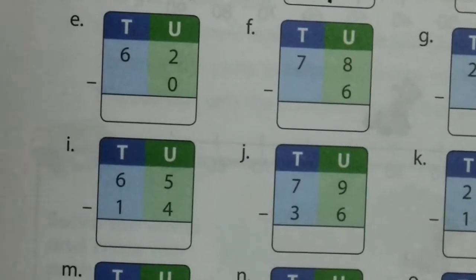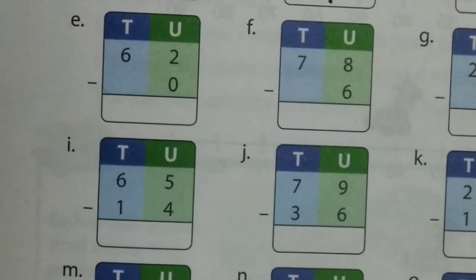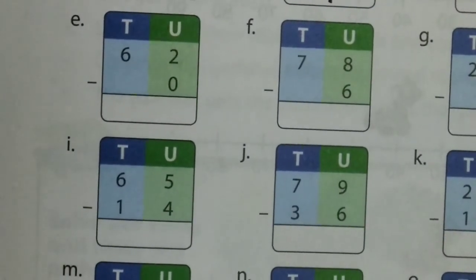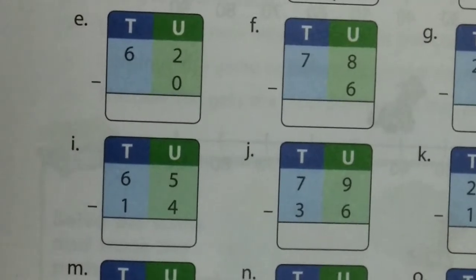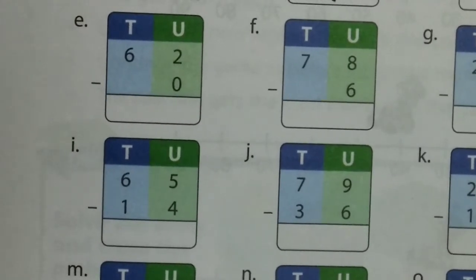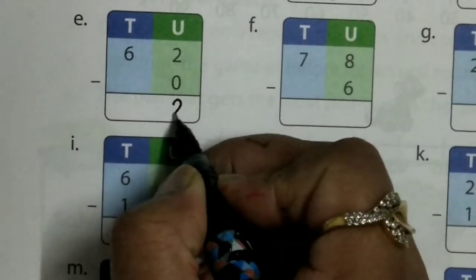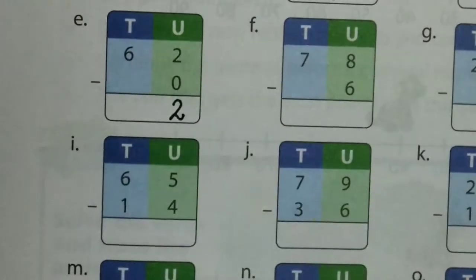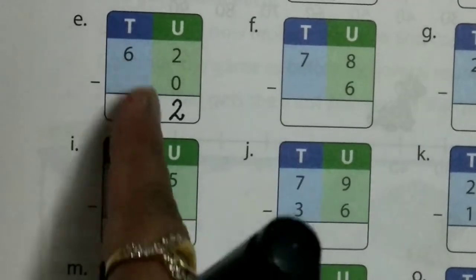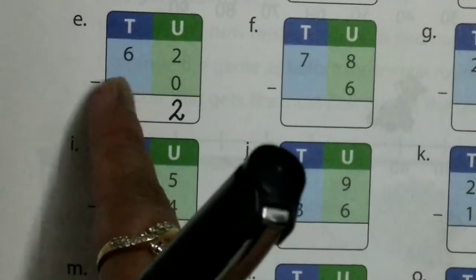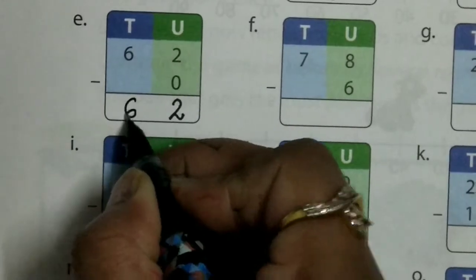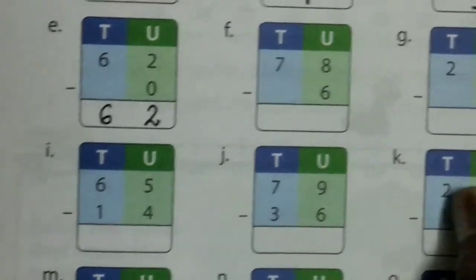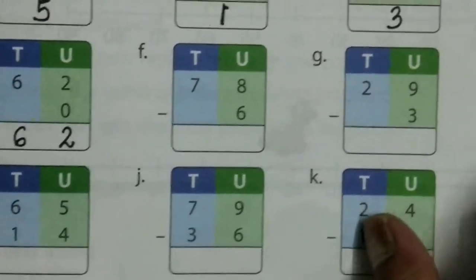A, B, C, D done. Now come to E. 2 minus 0 — when we remove 0 from any number, it will be the same. So 2 minus 0 equals 2. And 6 minus nothing — nothing we have, so it will be 6.